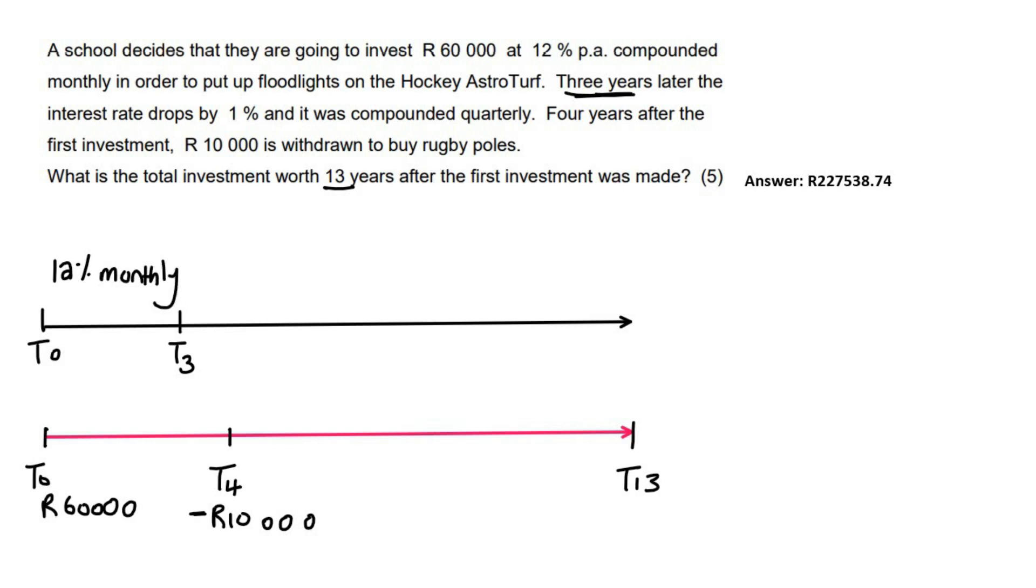Then it changes by, it drops by 1% and then it looks like it doesn't change again. So it says three years later, the interest rate drops by 1% and it's going to become quarterly. So that'll go all the way to the end because they don't change it again. So that means we'll now have 11%, but now it will be quarterly.